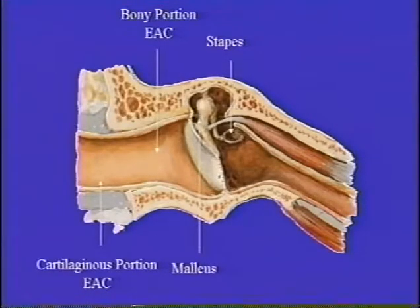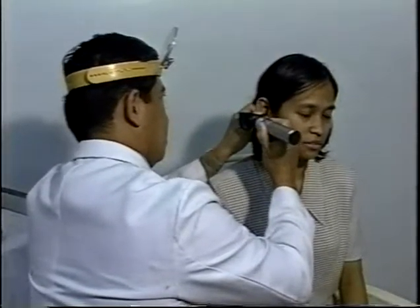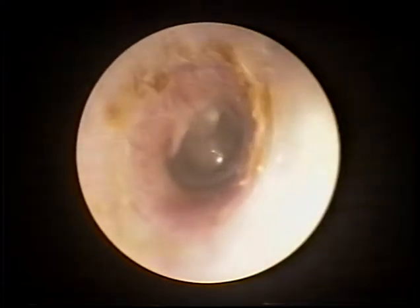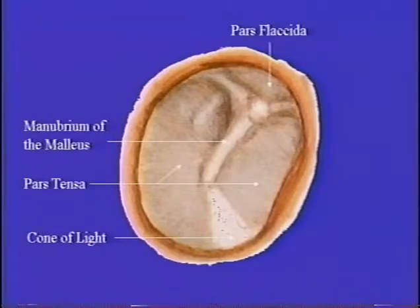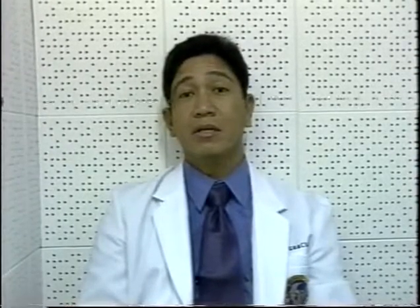After cleaning the external auditory canal, you may start evaluating the status of the tympanic membrane. You normally see the annulus, the cone of light which is reflected anteriorly and inferiorly for the right tympanic membrane, the anterior and posterior malleolar folds, and the manubrium. In some cases, you will appreciate a perforation. You have to describe the location of the perforation as to whether it is central or peripheral, and describe the degree of perforation in percentage. In some cases, you will also appreciate some discharge — it could either be mucoid or mucopurulent. The type of discharge will tell us the extent or chronicity of the ear infection.